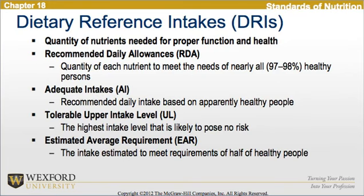Looking at the Dietary Reference Intakes or DRIs, these represent the quantity of nutrients needed for proper function and health. The Recommended Daily Allowance is the quantity of each nutrient needed to meet the needs of nearly all, that is 97 to 98%, of healthy persons. The adequate intake is the recommended daily intake based on apparently healthy people. There is also a tolerable upper intake level and an estimated average requirement, which is the intake estimated to meet the requirements of half of healthy people.